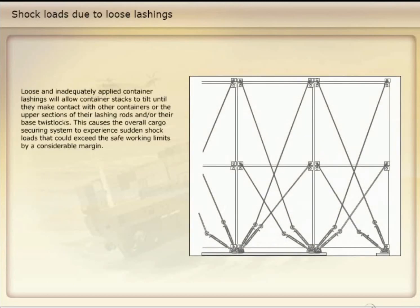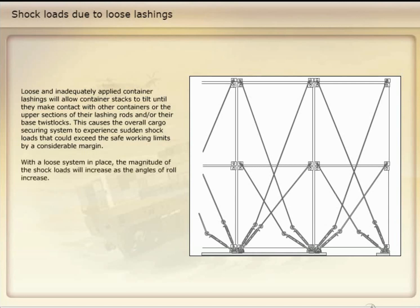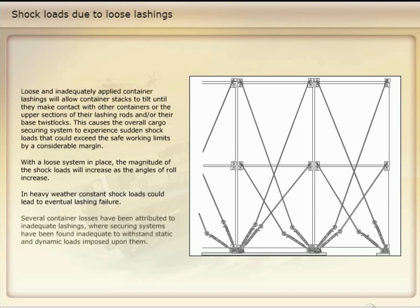Loose and inadequately applied container lashings will allow container stacks to tilt until they make contact with other containers or the upper sections of their lashing rods and/or their base twist locks. This causes the overall cargo securing system to experience sudden shock loads that could exceed the safe working limits by a considerable margin. With a loose system in place, the magnitude of the shock loads will increase as the angles of roll increase. In heavy weather, constant shock loads could lead to eventual lashing failure. Several container losses have been attributed to inadequate lashings where securing systems have been found inadequate to withstand static and dynamic loads imposed upon them.